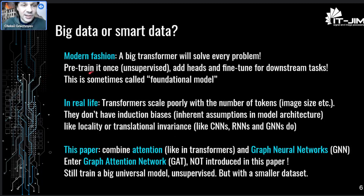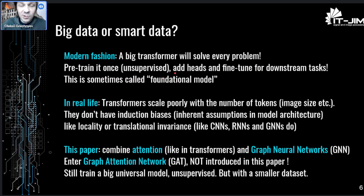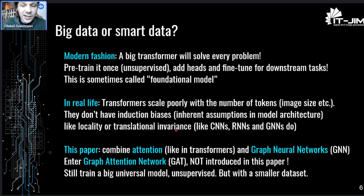As probably all know nowadays, there is a modern fashion that a big transformer will solve every problem. Of course it's not so in reality, but the prophets of transformers always think like that. If you have a big transformer, the idea is to pre-train it once in a supervised way on a huge dataset, and then for particular downstream tasks you add heads to this foundational model and fine-tune for particular tasks. It's a standard paradigm nowadays, especially in natural language processing. In real life, of course, transformers have well-known drawbacks: they scale poorly with the number of tokens, and they don't have inductive biases such as locality or translational invariance. Thus they typically take more time and dataset size to train successfully.